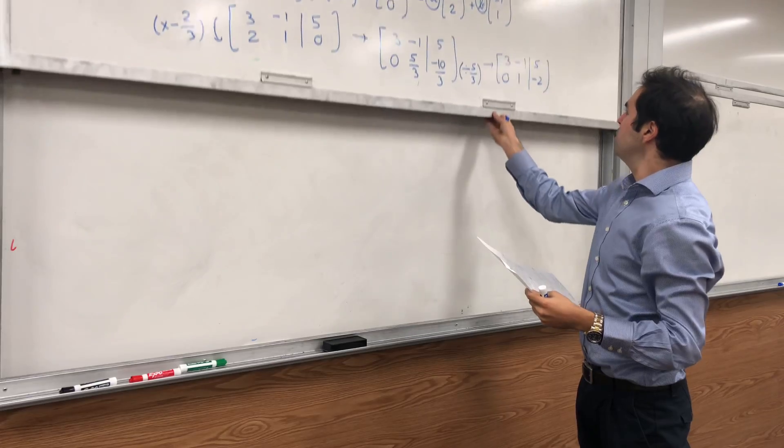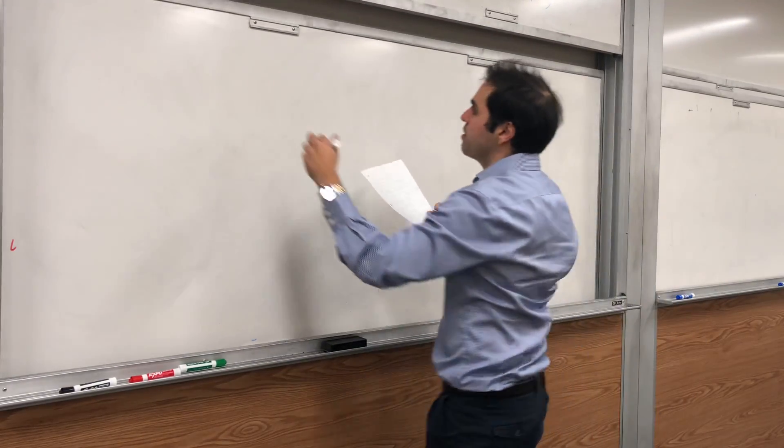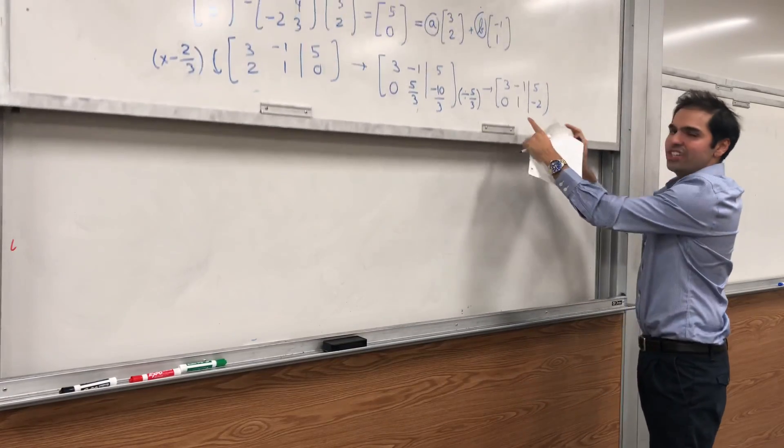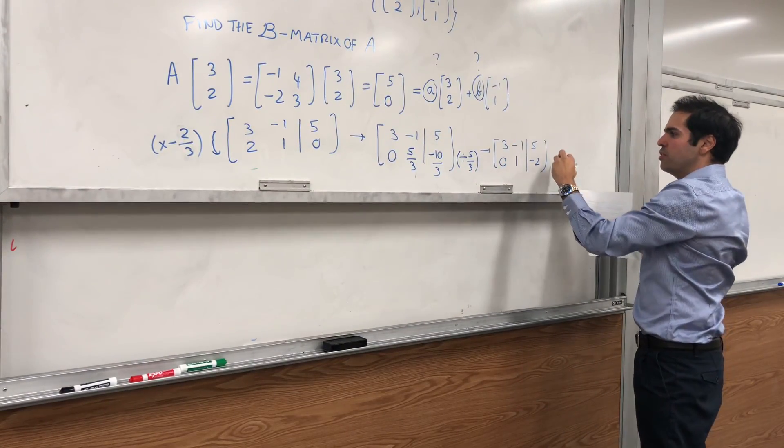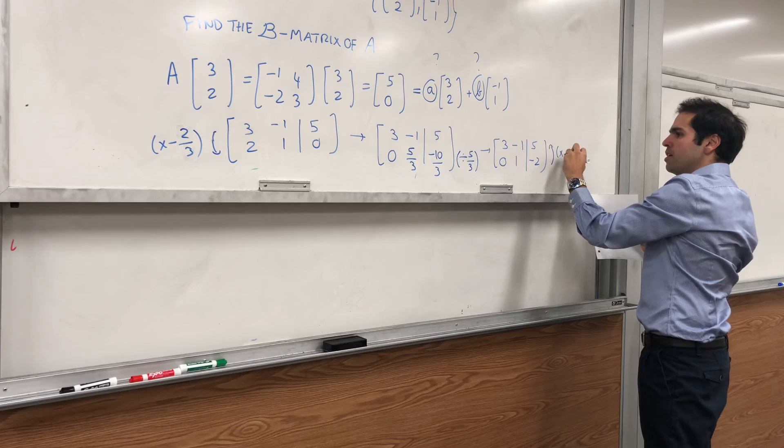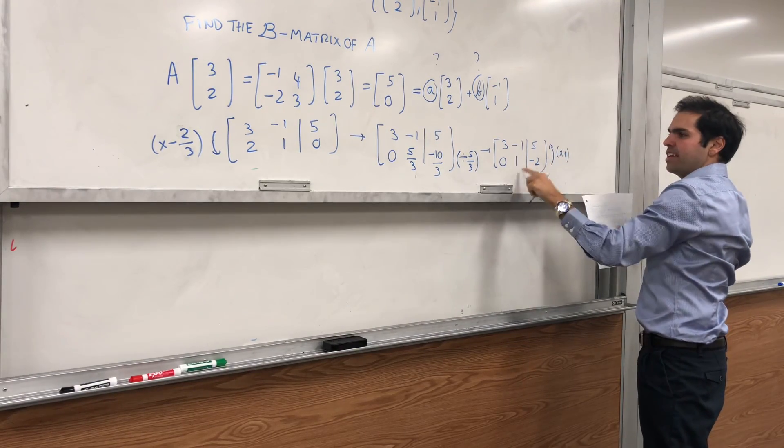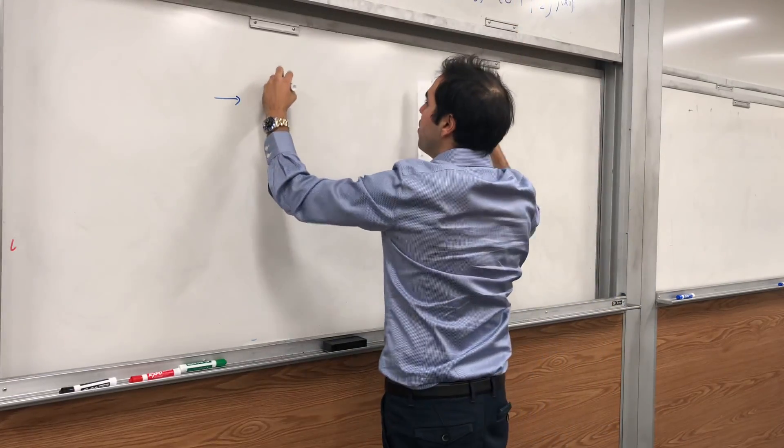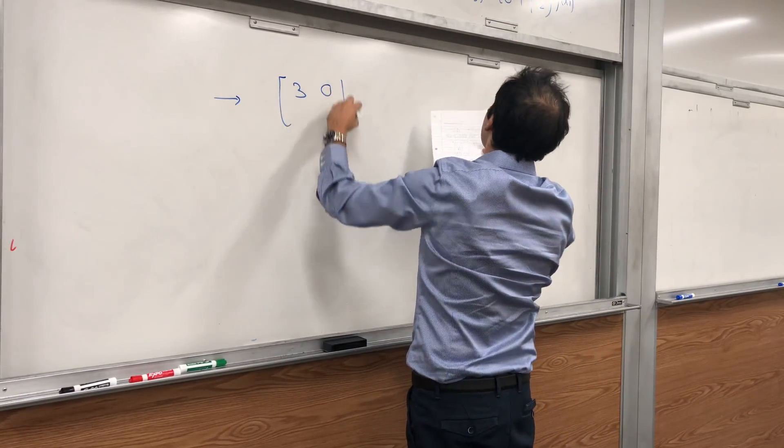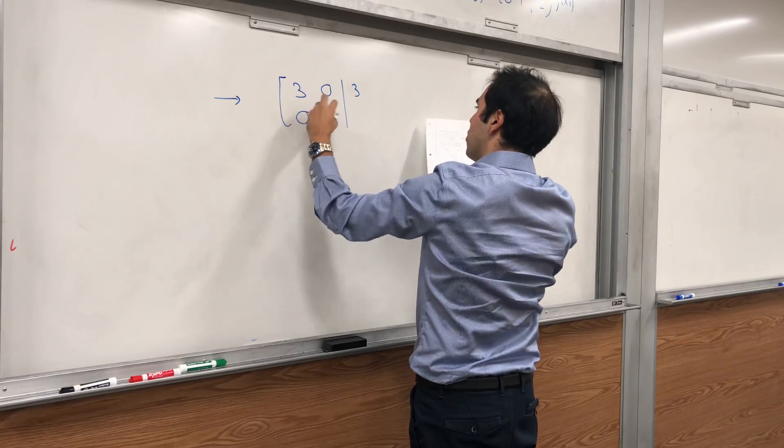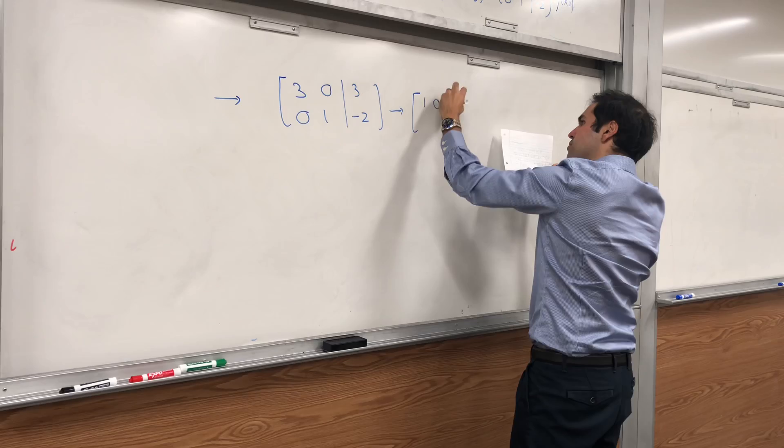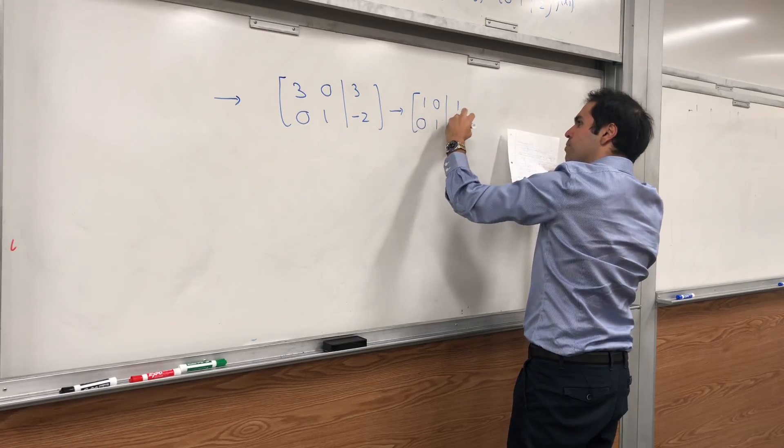And then let's just continue row reducing. It is in row echelon form, but let's make it into reduced row echelon form. So let's add the second row to the first row, and we get [3, 0, 3; 0, 1, -2], and then we just get [1, 0, 1; 0, 1, -2].